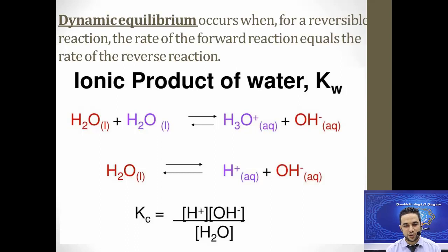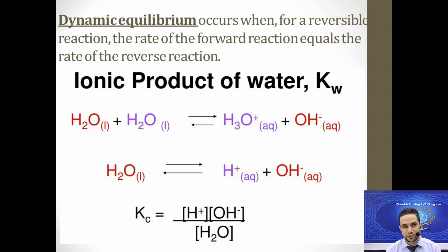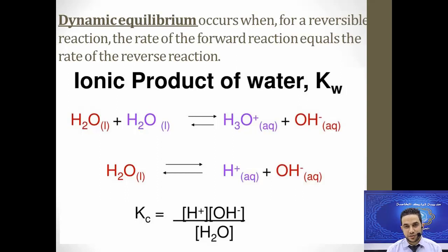Please note that all homework questions will be uploaded on Moodle about these parts. Regarding the ionic product of water: K means equilibrium constant, and the letter after K refers to the substance or compound for which we calculate the equilibrium constant. For water, the letter is W, so Kw refers to the ionic product of water.